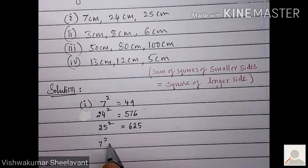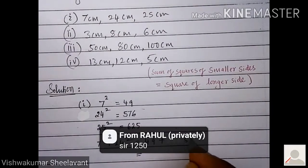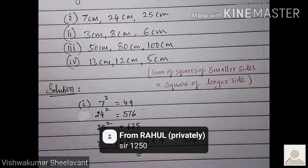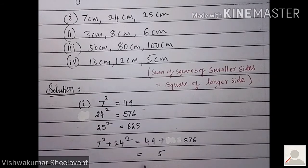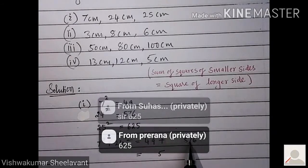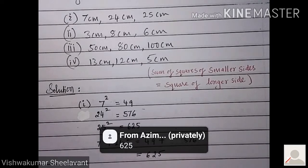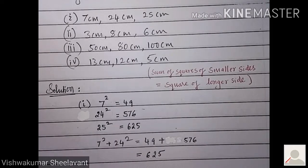Now 7 square plus 24 square is 49 plus 576. 9 plus 6, 15, carry 1. 7 plus 1, 8. 8 plus 4, 12, carry 1. 5 plus 1, 6. Yes, correct. You get 625, and what is 625? 625 is 25 square.